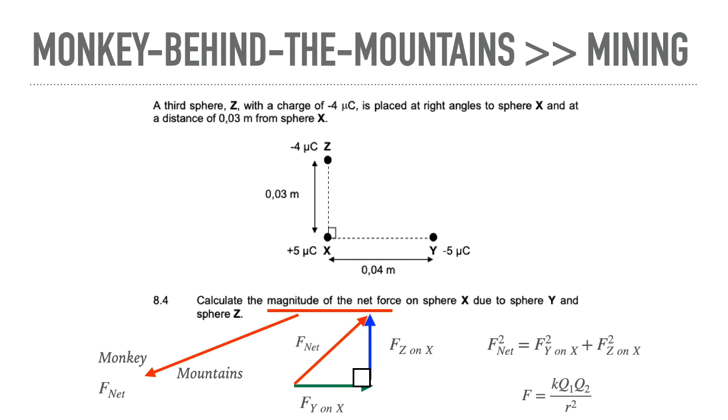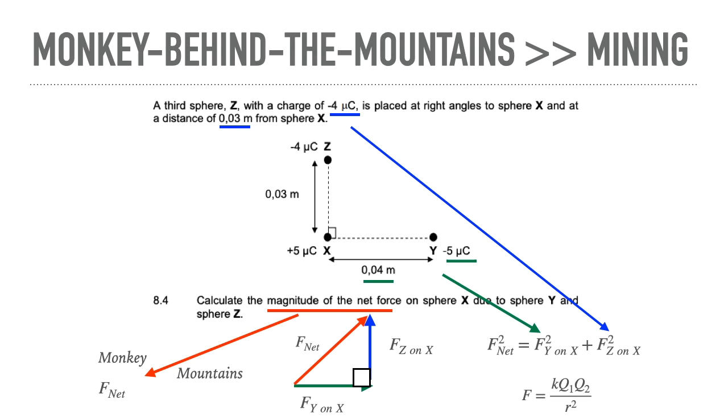So if I go to my formula sheets and I find k times q1 times q2 over r squared because they work with a charge, where do I get the first charge, the Z on X? Well that's the blue. The charge for Y on X, well that's the green. So then I've got to remember that I can now calculate F net. But an important little tidbit that was told to me by one of my physical sciences colleagues: remember that the signs are not included in calculating. The signs are only for attraction or repulsion.